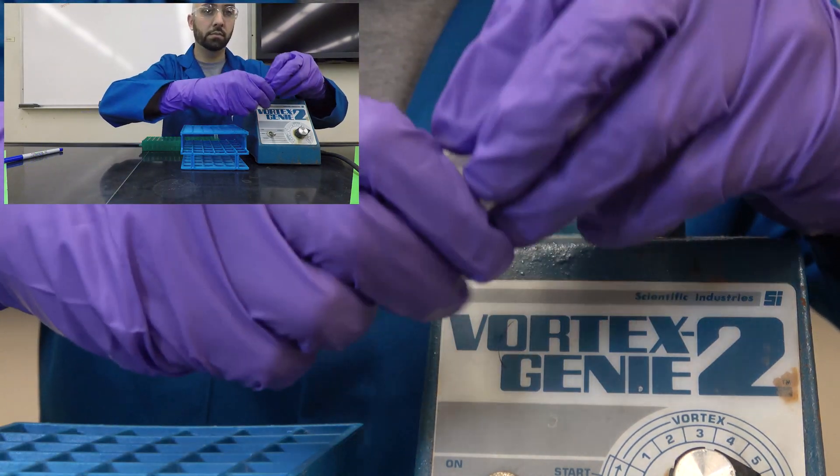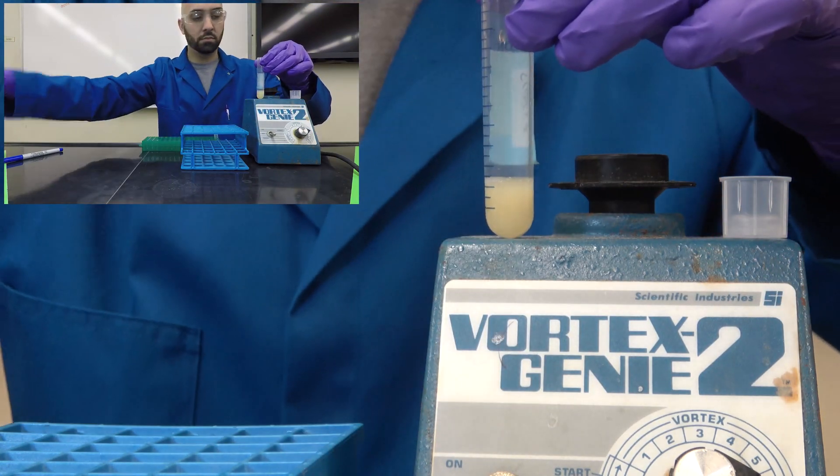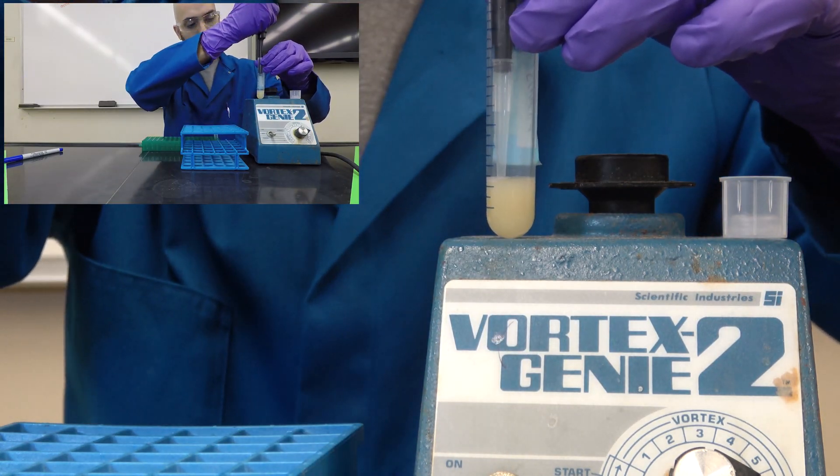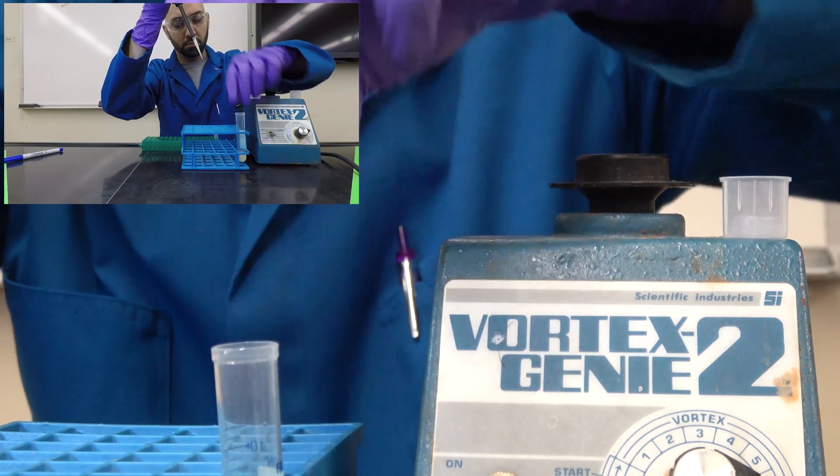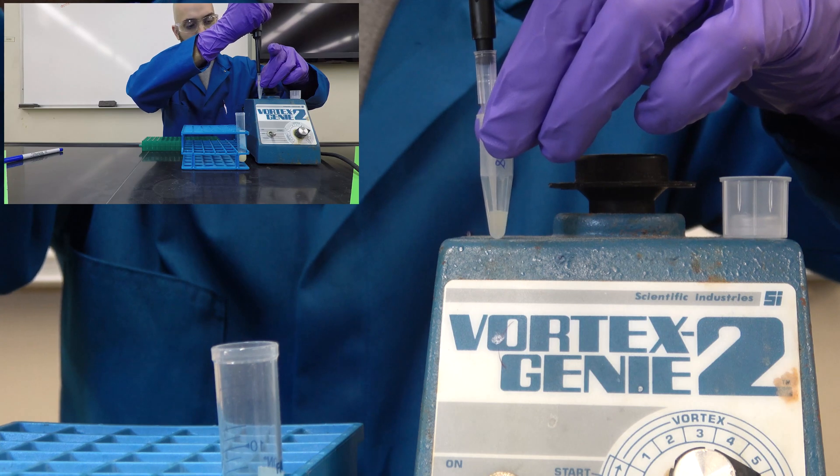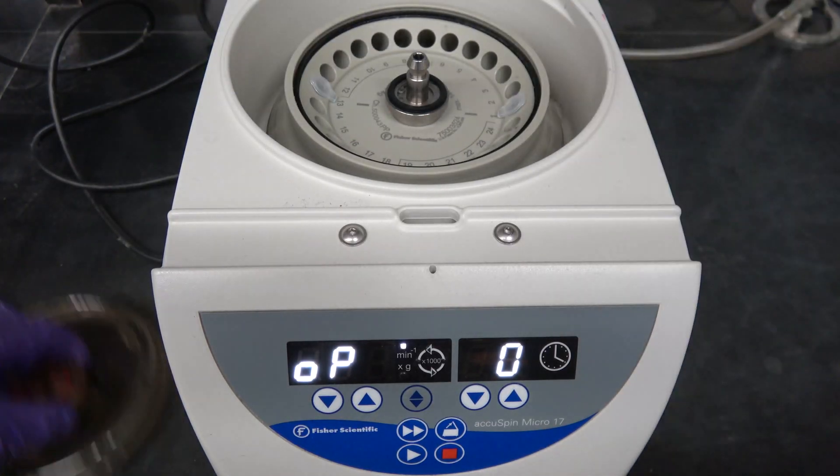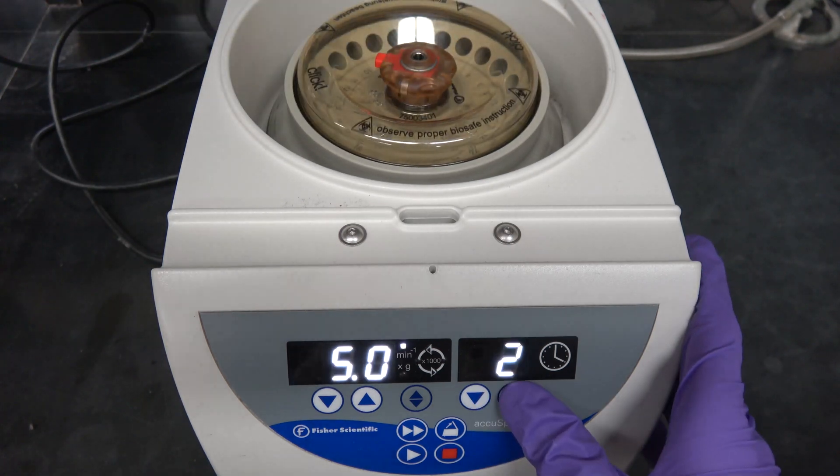We only need 200 microliters of yeast for our DNA extraction, so we'll transfer that volume to a microcentrifuge tube. We'll balance the centrifuge and run for 5 minutes at 5000 RPM.